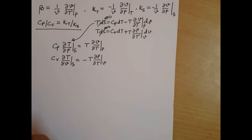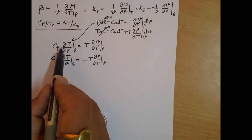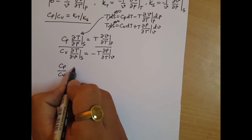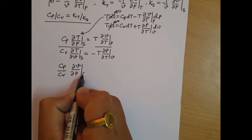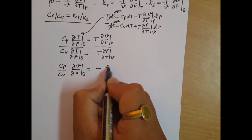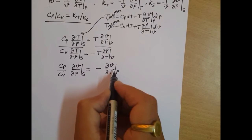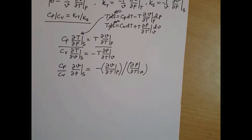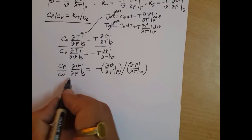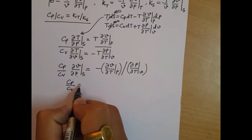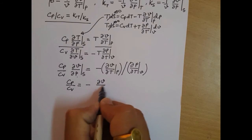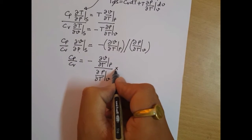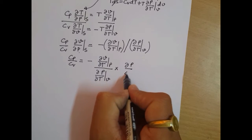Then the first relation can be written as Cp times del T by del P at constant entropy equals T times del V by del T at constant pressure. The second relation can be written as Cv times del T by del V at constant entropy equals minus T times del P by del T at constant volume. Now divide these equations and you will get Cp by Cv times del T by del V at constant entropy equals minus T times del V by del T at constant pressure, divided by T times del P by del T at constant volume. Bringing terms across, Cp by Cv equals minus T del V by del T at constant pressure, divided by del P by del T at constant volume, multiplied by del T by del V at constant entropy.